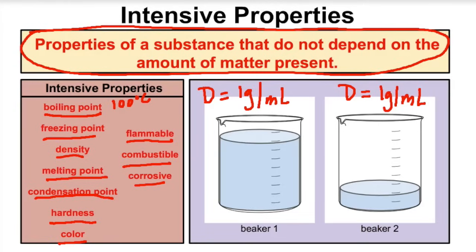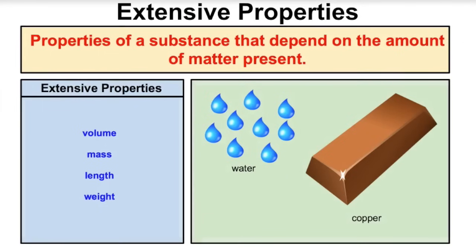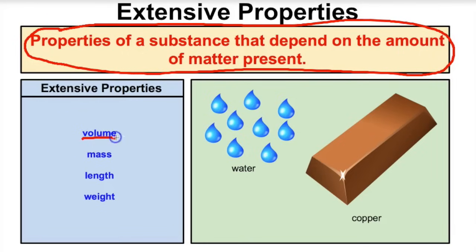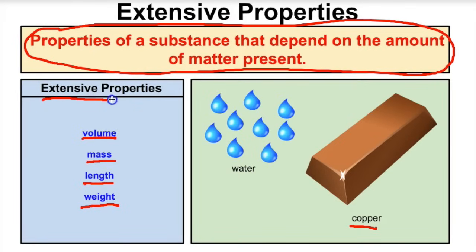Extensive properties of matter are properties of a substance that do depend on the amount of matter present. For example, if I ask you what the volume of water is, you might say it depends on how much water you have — that's because volume is an extensive property. Mass is also extensive; the mass of copper depends on how much copper you have. Length depends on how big the object is, and weight also depends on how much copper you have. Volume, mass, length, and weight are all extensive properties of matter.